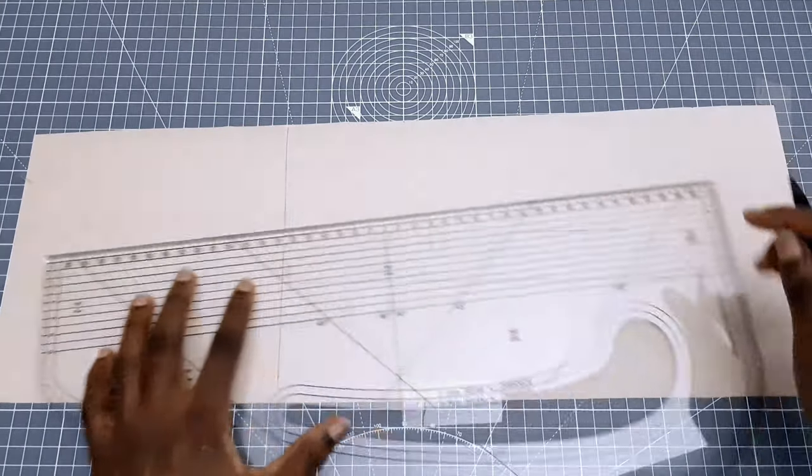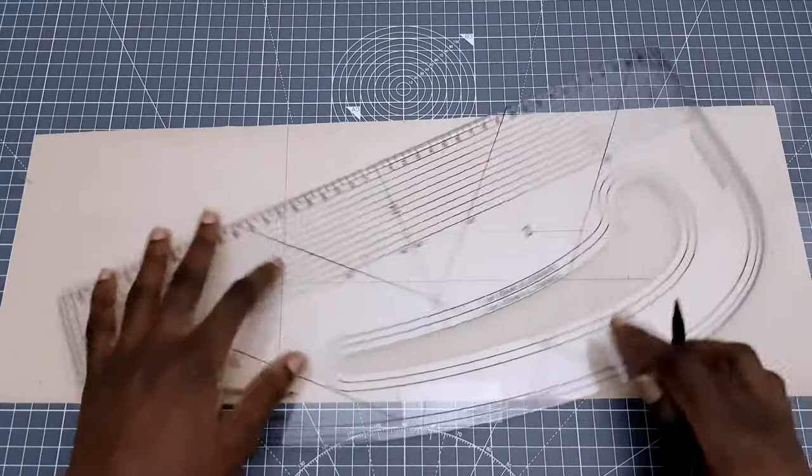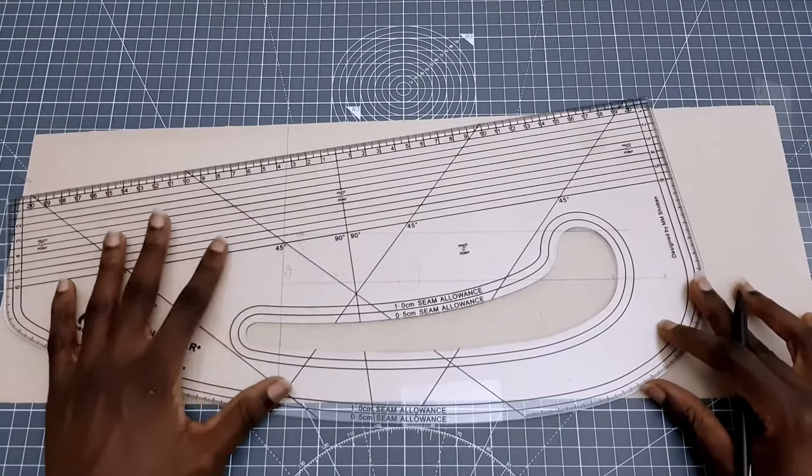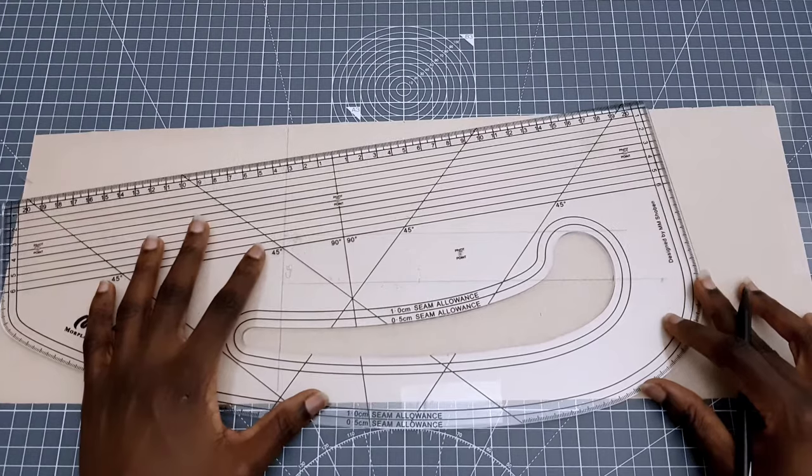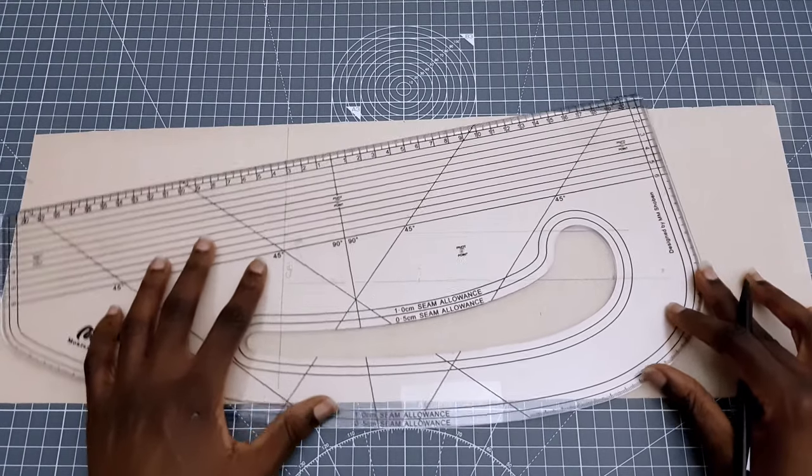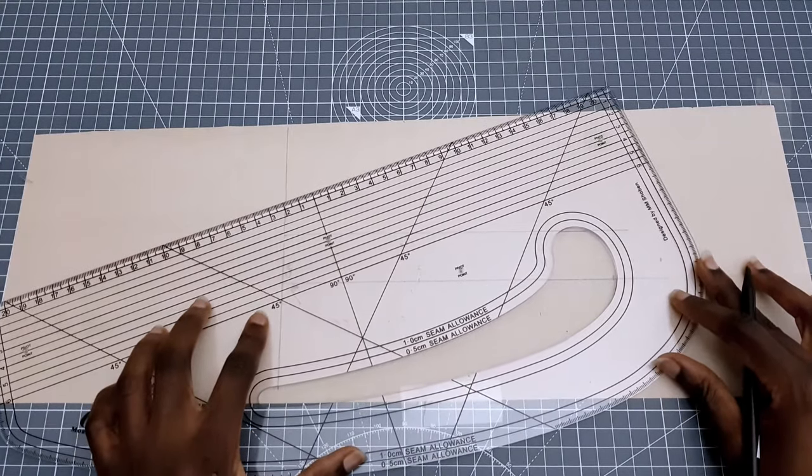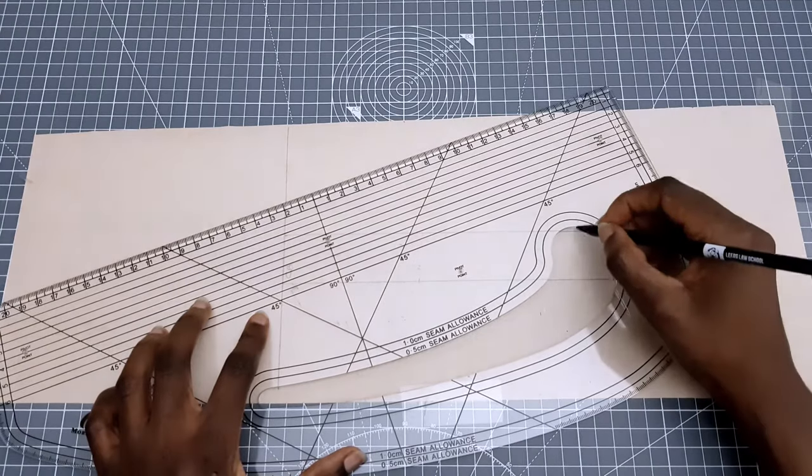So depending on the shape you're going for you can either leave yours as a straight line or you can curve it out. So I'm going to use my pattern master to curve out my centre front. At this point we have a complete stand collar.